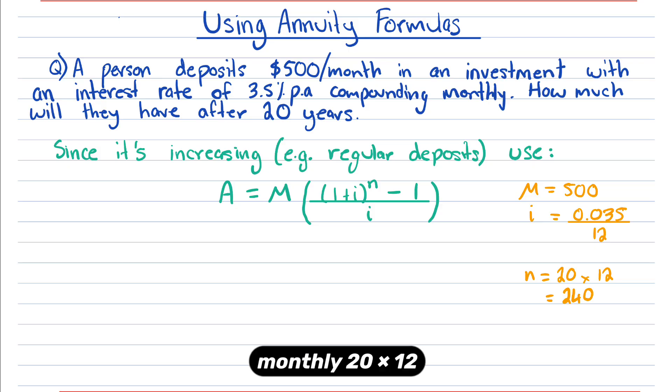So 20 years, compounding monthly, 20 times 12 is 240.